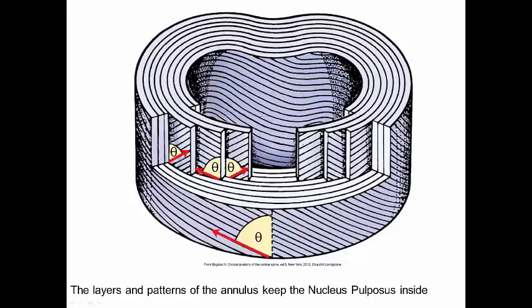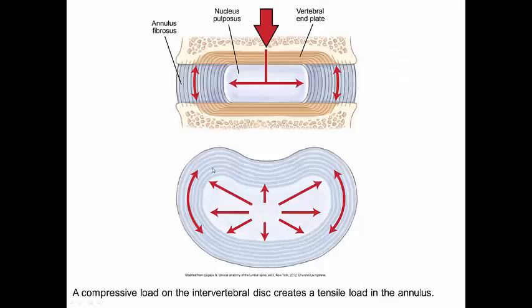That structure basically holds in the gelatinous jelly center and doesn't let it come out even if one of these layers is injured. Here's another view of it — here's the annulus, here's the nucleus pulposus. As you compress the intervertebral disc, it expands outward and there's a tensile load on the annulus fibrosis.